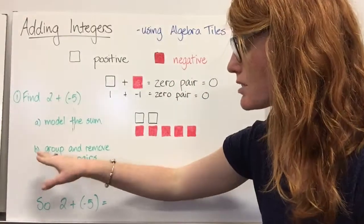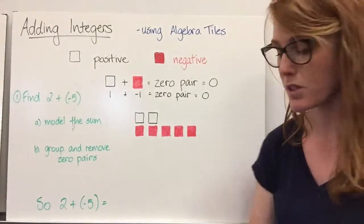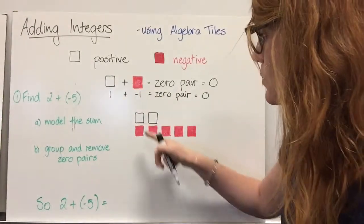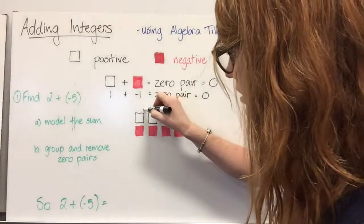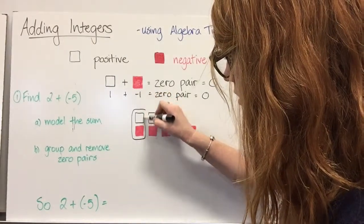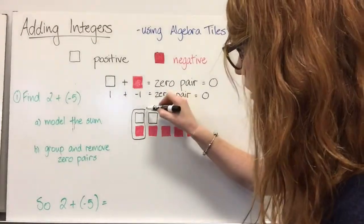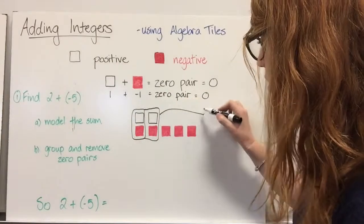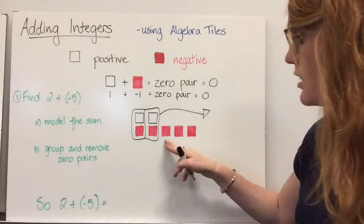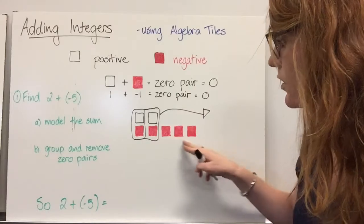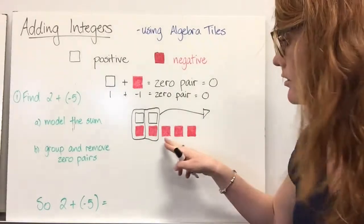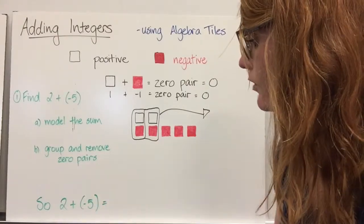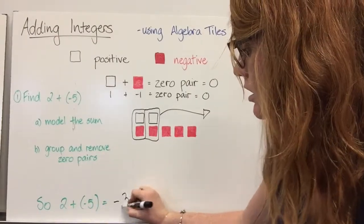The second step is to group and remove the zero pairs. We have a positive one and a negative one here, and a positive one and a negative one here. We group those and remove them, and we are left with negative three — these are negative, and there are three of them. So two plus negative five equals negative three.